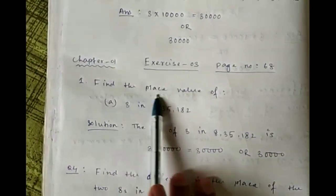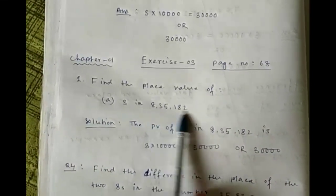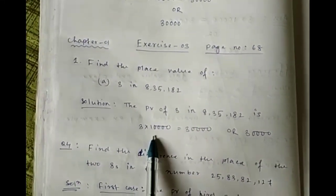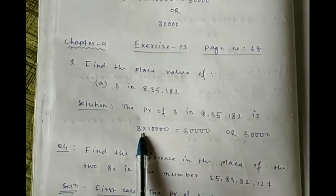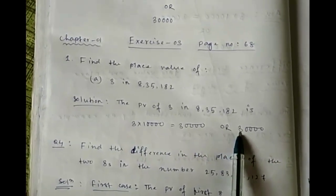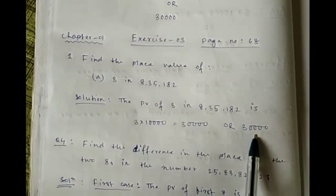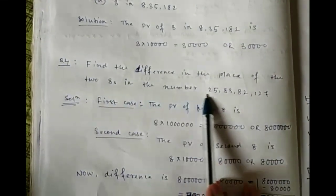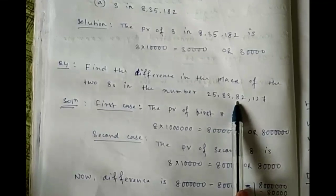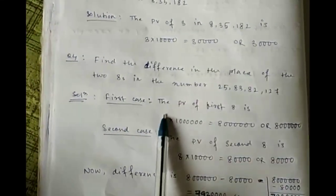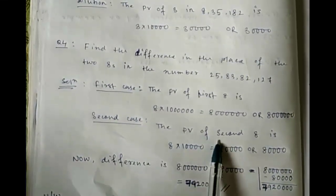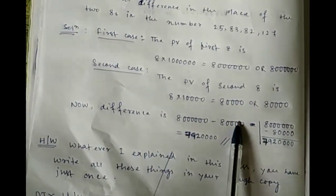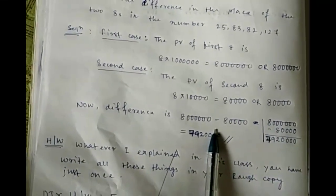Exercise 3 from page number 8: find the place value of 3 in this number. The place value of 3 is ten thousand, so we multiply 3 by 10,000 or write three followed by four zeros. Question 4: find the difference in the place values of the two 8s in the given number. We find the place value of each 8 separately, then subtract the smaller value from the bigger value to get the result.